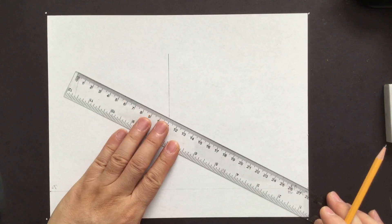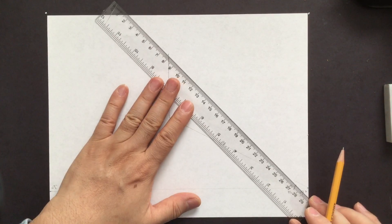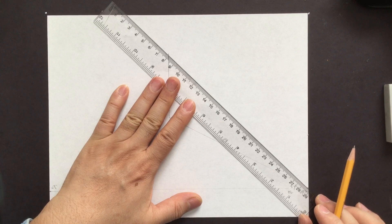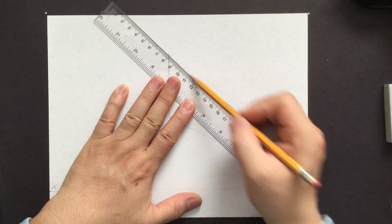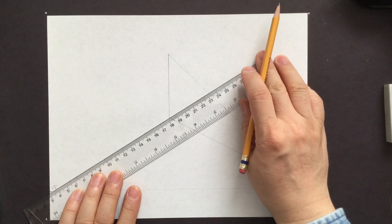Okay, let's start connecting to the vanishing point. Again, all these vanishing lines making it lighter. So later, you can easily erase.